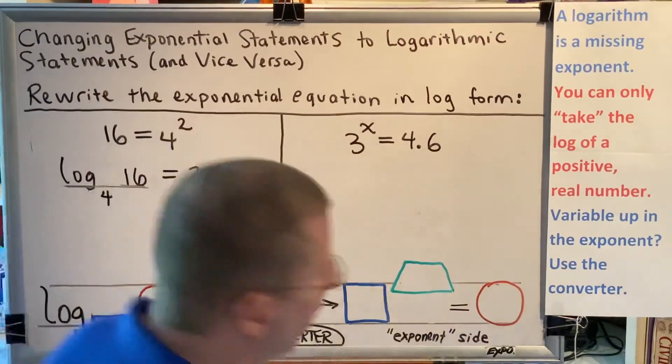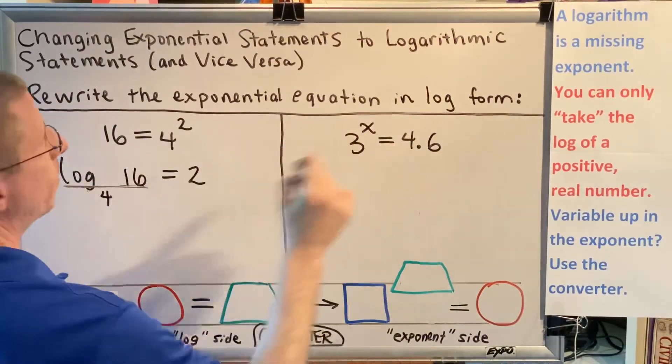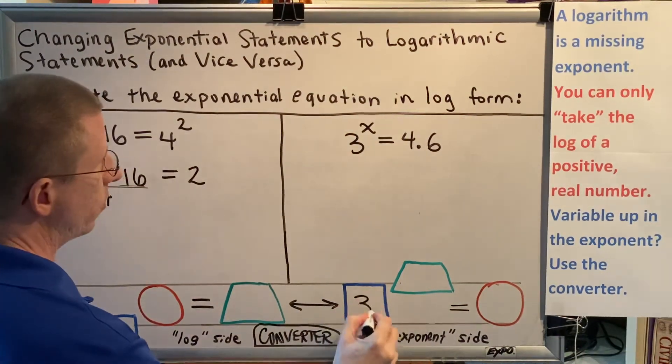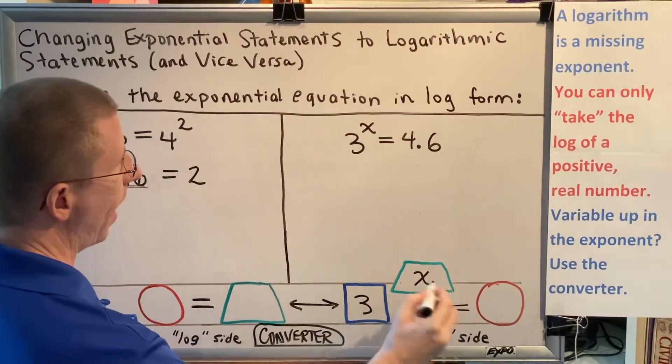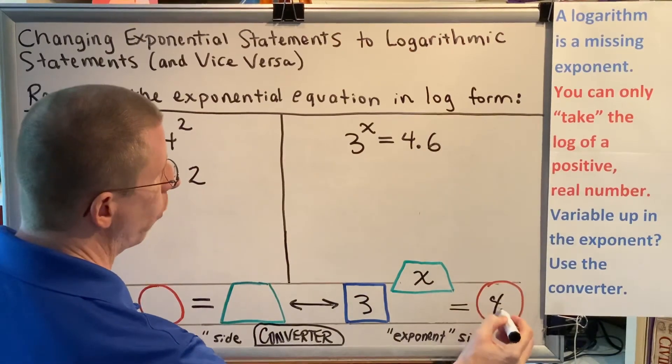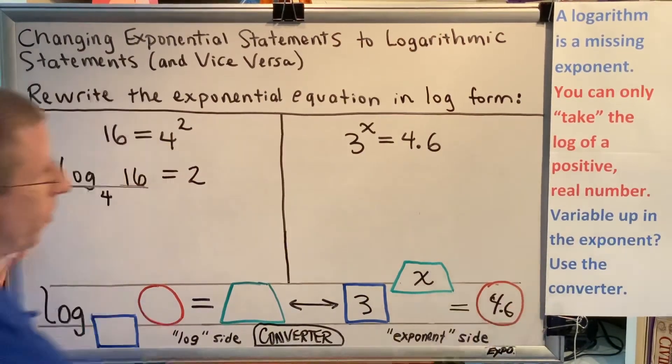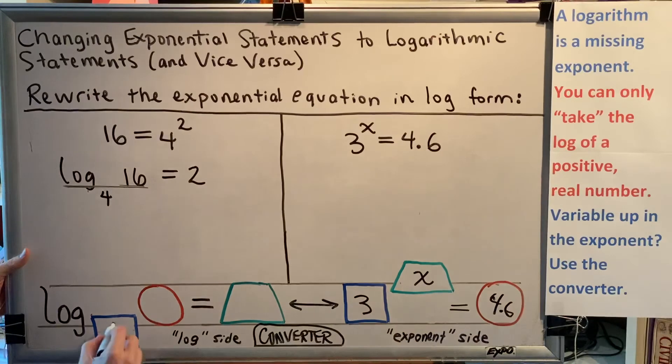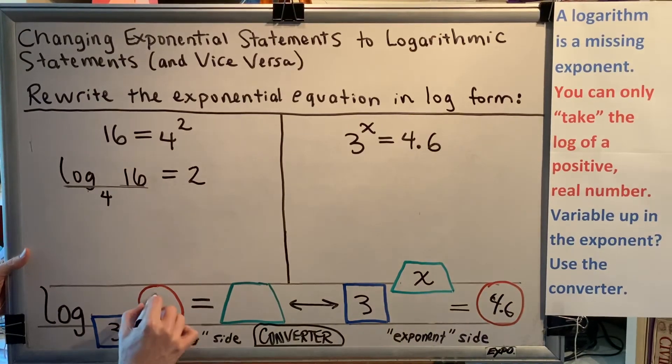Let's begin. 3 to the x power equals 4.6. The base is 3, the exponent is x, the argument is 4.6. Matching up the colors and shapes on the left side, we would get log base 3 of 4.6 equals x.